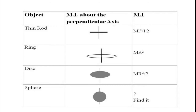I hope you all know the moment of inertia of the given bodies. The moment of inertia of a thin rod about a perpendicular axis is equal to ml² / 12. The moment of inertia of a ring about the perpendicular axis passing through its center is mr². The moment of inertia of a disc about an axis passing through its center is equal to mr² / 2.